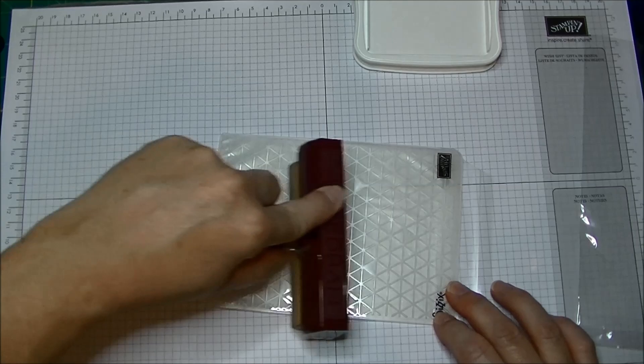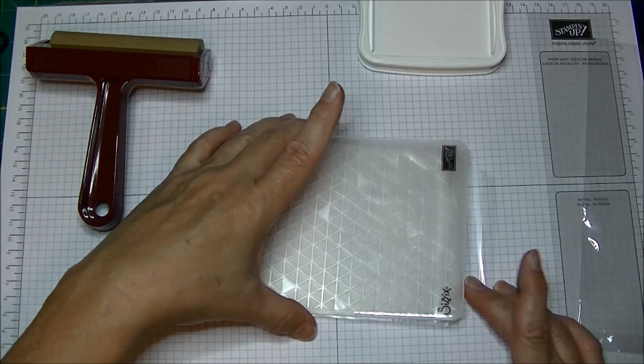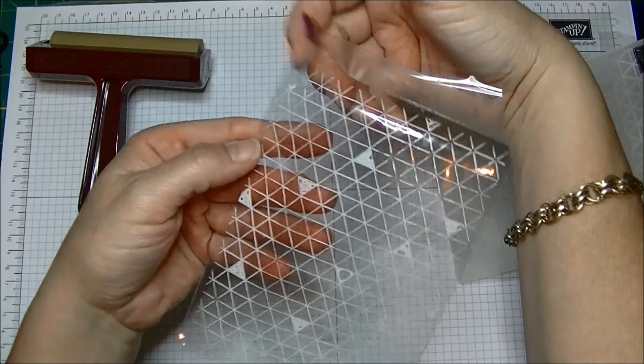So I'm just going to roll this. I'm putting some amount of pressure on it because I want to give it good coverage. Then when I take this out, when I pull this out, this is what I have. How fun is that?